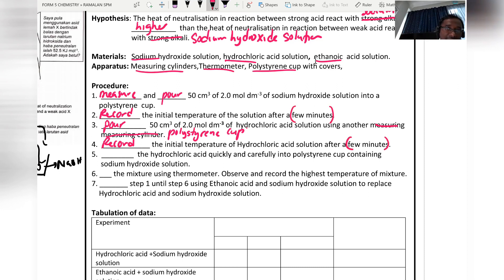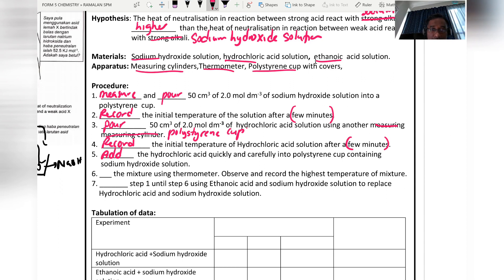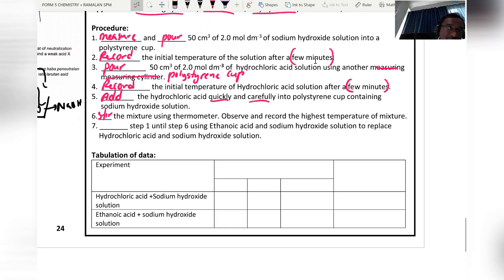Record the initial temperature of hydrochloric acid after a few minutes. Add the hydrochloric acid quickly and carefully into the polystyrene cup containing sodium hydroxide solution. Stir the mixture using a thermometer, observe, and record the highest temperature of the mixture.